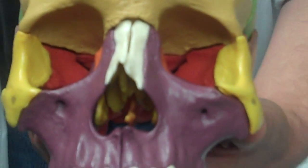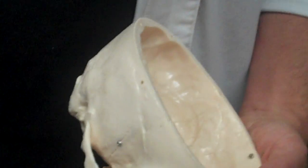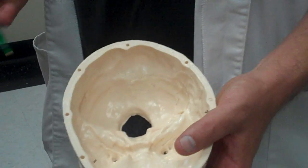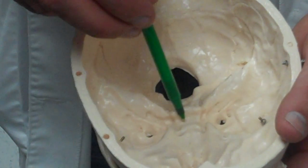Then we have the sella turcica. Which, if I can borrow that half skull. Sphenoid bone, sella turcica. It's right there. Looks like a little chair.